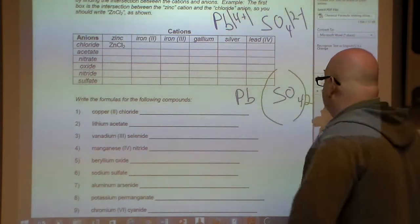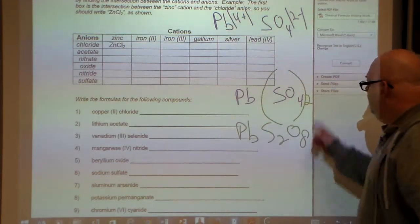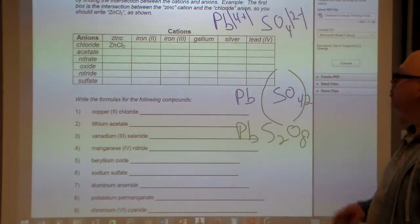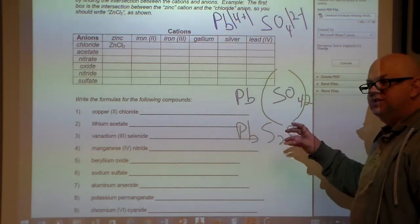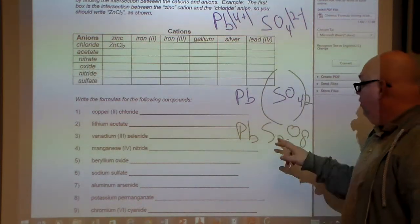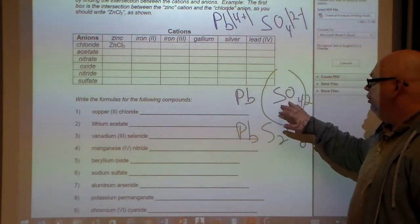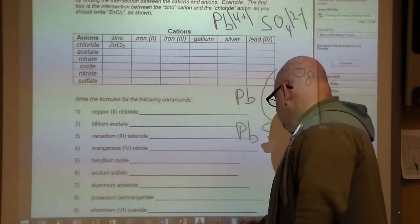Now somebody has said in class, hey, could we have Pb S2 O8, because we're just multiplying it out? Well, the problem that you have with that, ladies and gentlemen, is two SO4s are way different than one S2O8. They're not the same. So when we look at SO4, we're looking at two separate SO4s. Alright.